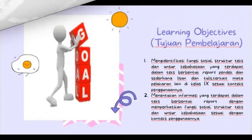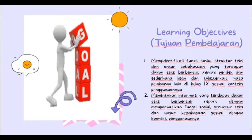Based on basic competence 3.4, we move to the learning objectives. There are two purposes. The first is to identify social function, structure of text, and language features in report text, short and simple, orally and written, related to other subjects at 9th grade. The second is to determine information in report text by focusing on social function, structure of text, and language features.